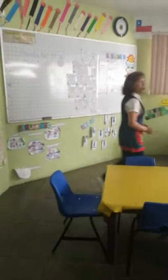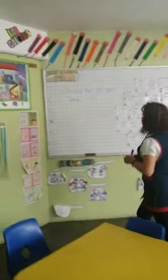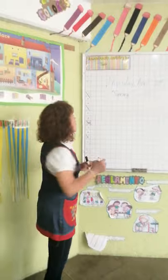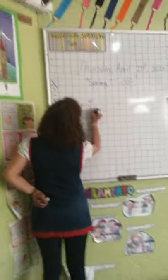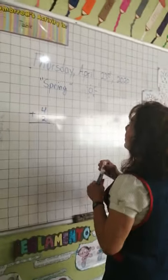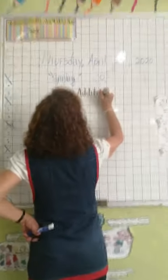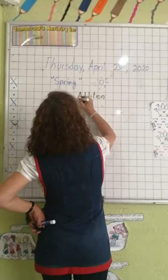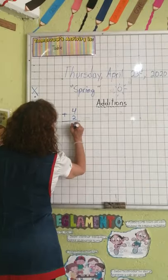I'm going to write some additions on the board and you are going to copy them in your English notebook. How much is 4 plus 2? Think — how much is 4 plus 2? Do you have the answer? 4 plus 2 equals 6. Excellent, kids! Now, how much is 8 plus 1? 8 plus 1 equals 9. Very good, kids.